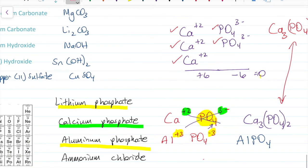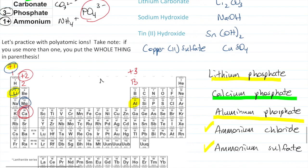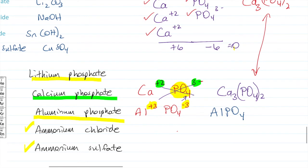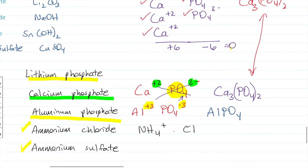Now let's look at ammonium chloride and ammonium sulfate. Remember, ammonium is the positive polyatomic ion — NH4⁺. For ammonium chloride: ammonium is NH4⁺. Chloride comes from chlorine, which is in group 17 and has a minus one charge, so Cl⁻. The charges balance — plus one minus one — so I just put them together: NH4Cl. No parentheses, no charges in the final answer. That is ammonium chloride.